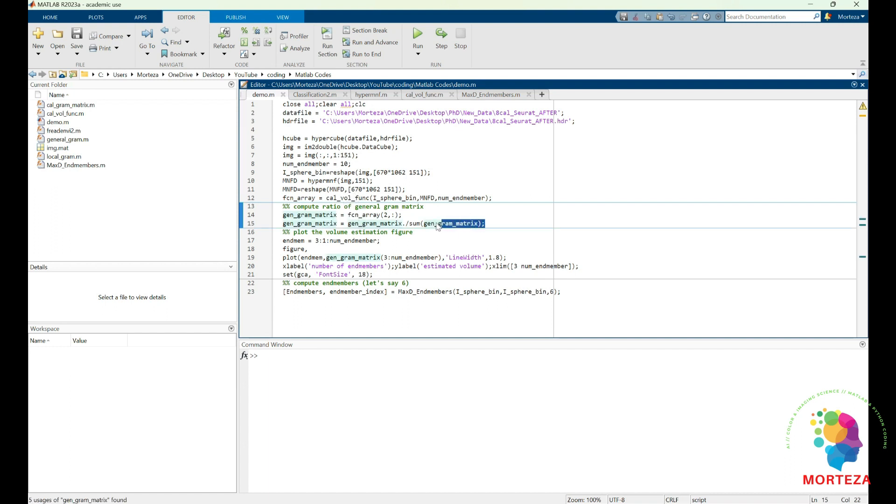And then this function here is going to calculate the endmembers and also the gram matrix. And then here is the ratio of the general gram matrix. And then here I'm going to be plotting the volume estimation. And then this plot here is going to help us specify the number of endmembers. And then when we know the number of endmembers, we're going to extract them using this function MaxD. But for now, let's say I don't know the number of endmembers in my hyperspectral data, and I just use ten as the number of endmembers. Let's run it and see what happens.